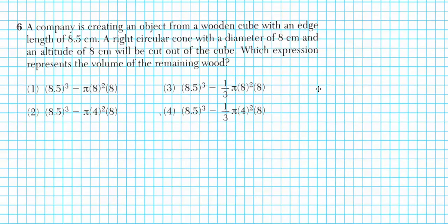It reads: a company is creating an object from a wooden cube with an edge length of 8.5 centimeters. A right circular cone with a diameter of 8 centimeters and an altitude of 8 centimeters will be cut out of the cube. Which expression represents the volume of the remaining wood?